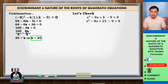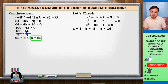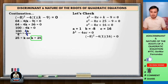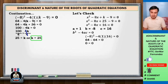Let us check if k equals 25. Substitute: x squared minus 8x plus 25 minus 9 equals 0. Since 25 minus 9 is 16, we have x squared minus 8x plus 16 equals 0. Here a equals 1, b equals negative 8, c equals 16. The discriminant b squared minus 4ac equals 0 for equal roots. Substituting: negative 8 squared minus 4 times 1 times 16 equals 64 minus 64 equals 0, and 0 equals 0. Check.